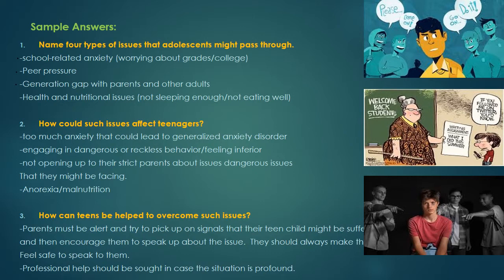Another adolescent issue is the generation gap with parents and other adults such as teachers and adults within their social circle. Finally, health and nutritional issues like not sleeping enough, which is a very common issue among teens, or not eating well — either not eating at all, eating in very small amounts, or eating a lot of junk food.